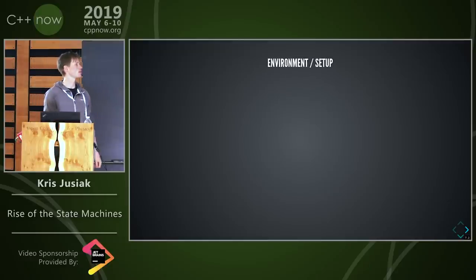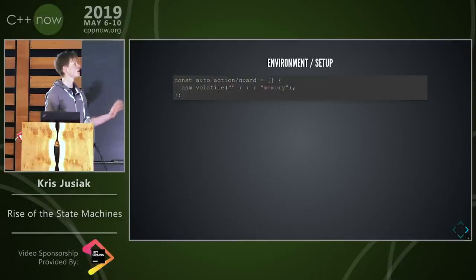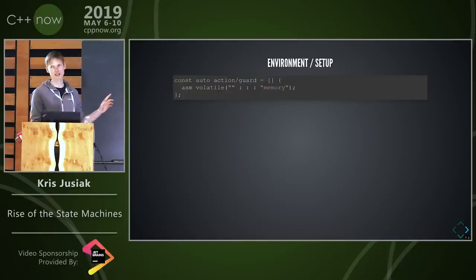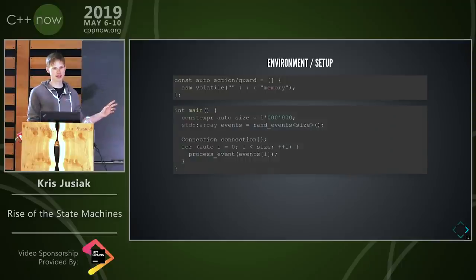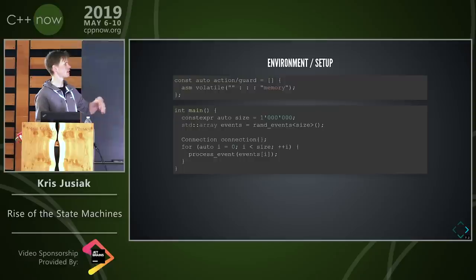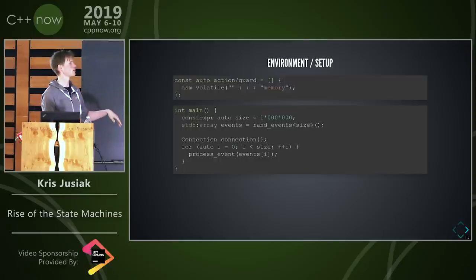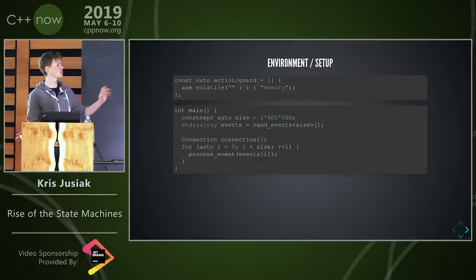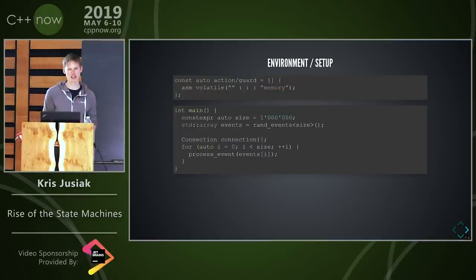Let's dig into the benchmarks. Actions and guards will be either optimized or not optimized away. We'll generate one million events upfront so we don't pay the cost of generating them at runtime — so we can actually measure something relevant.